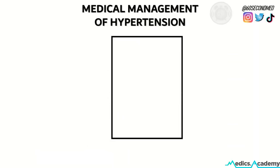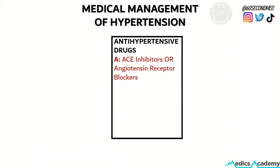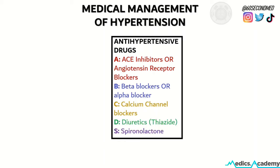In the medical management of hypertension, we have the ABCDs of antihypertensive drugs: ACE inhibitors or angiotensin receptor blockers, beta or alpha blockers, calcium channel blockers, and thiazide diuretics or spironolactone.